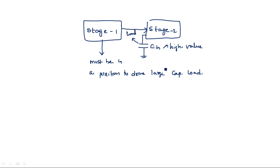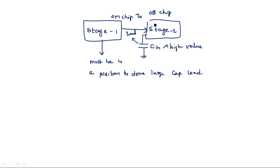The problem of driving comparatively large capacitance loads arises when signals must be propagated from on-chip to off-chip. This situation causes problems because typical off-chip capacitances may be several orders higher than on-chip capacitance. Off-chip capacitance is higher than on-chip capacitance.